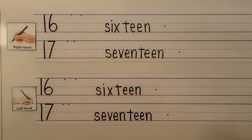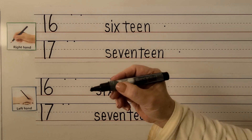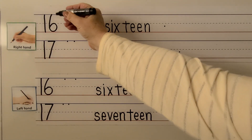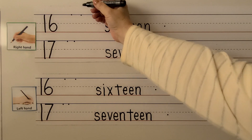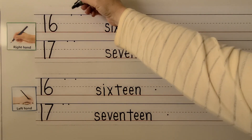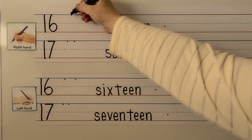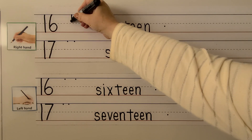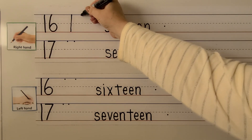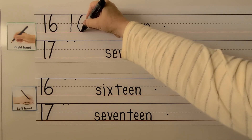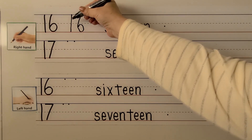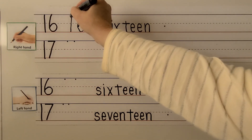We can write the number 16 with our right hand. We're going to make a 1 with a 6 next to it. We start at the top line and come straight down to make a 1, then put a 6 next to it. 16.